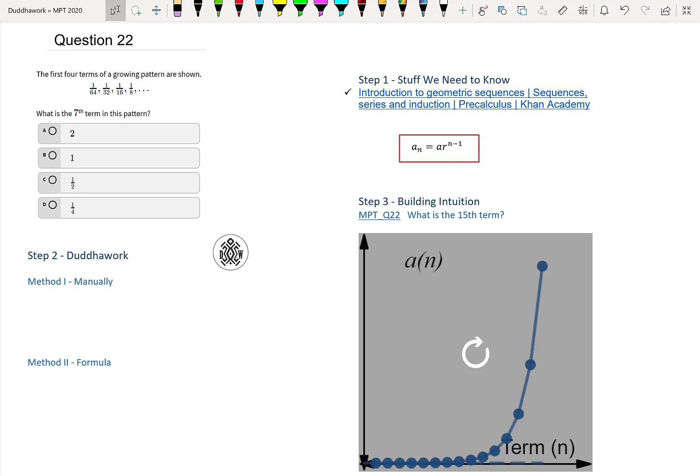We have 1 over 64, 1 over 32, 1 over 16, 1 over 8. And there's an obvious pattern here, but the question is, what is the seventh term of this pattern? Is it 2, 1, 1 half, or 1 quarter?